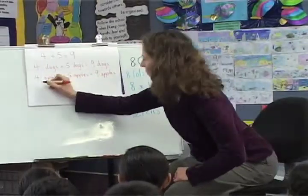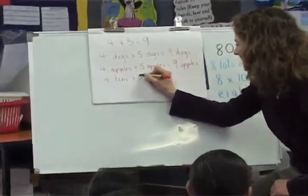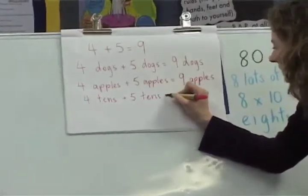What if it was four tens plus five tens? William? Nine tens. Nine tens.